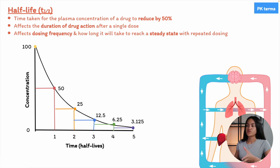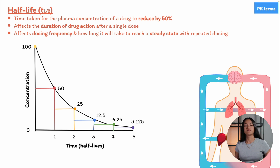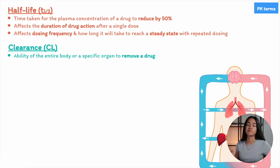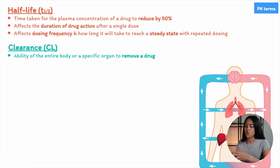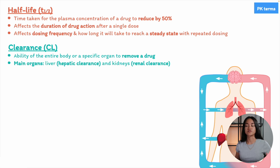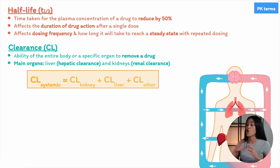For example, a drug with a short half-life might need to be administered more frequently to maintain its therapeutic effect, whereas a drug with a long half-life can be given less often. Next is clearance, which is the volume of plasma from which the drug is completely removed per unit time — an indicator of the efficiency of drug elimination. There are different types of clearance, including renal clearance, hepatic clearance, and total body clearance, which is the sum of all clearance pathways.